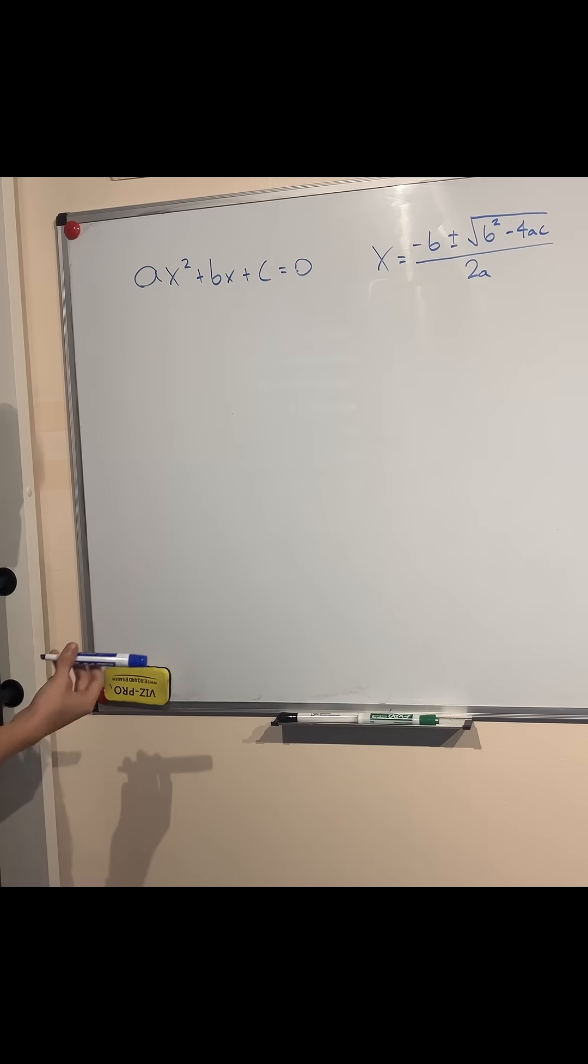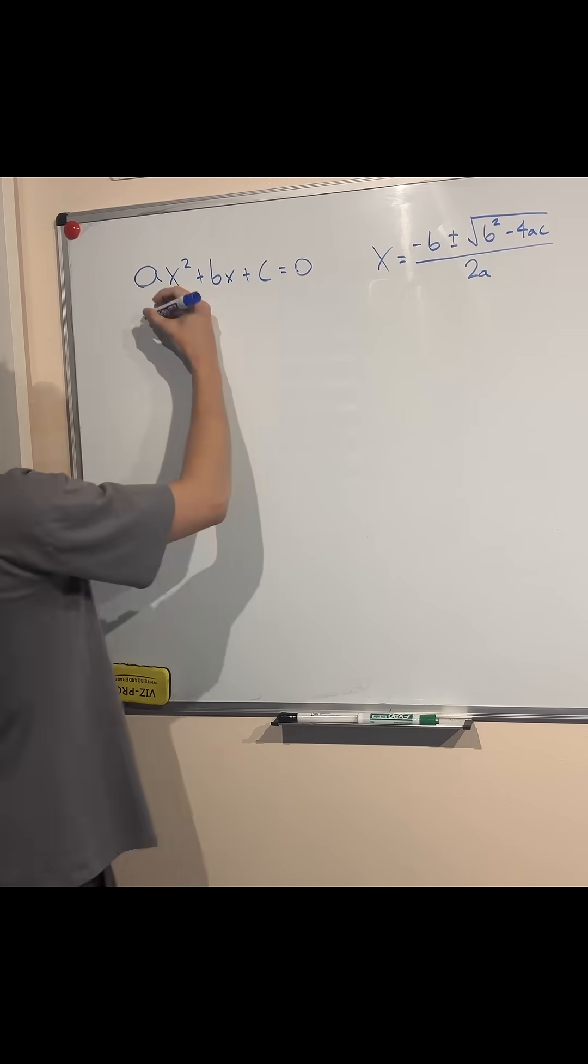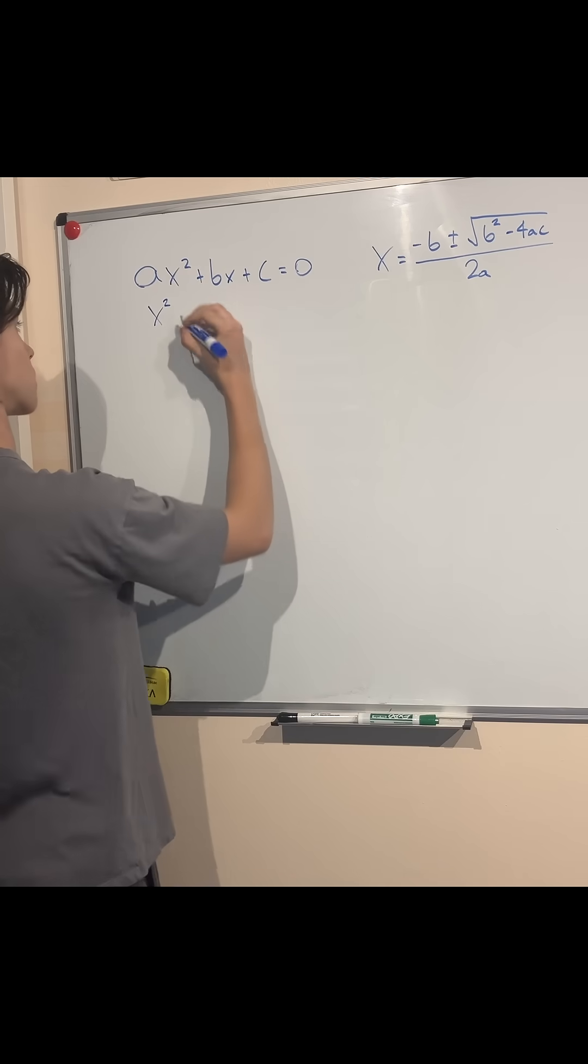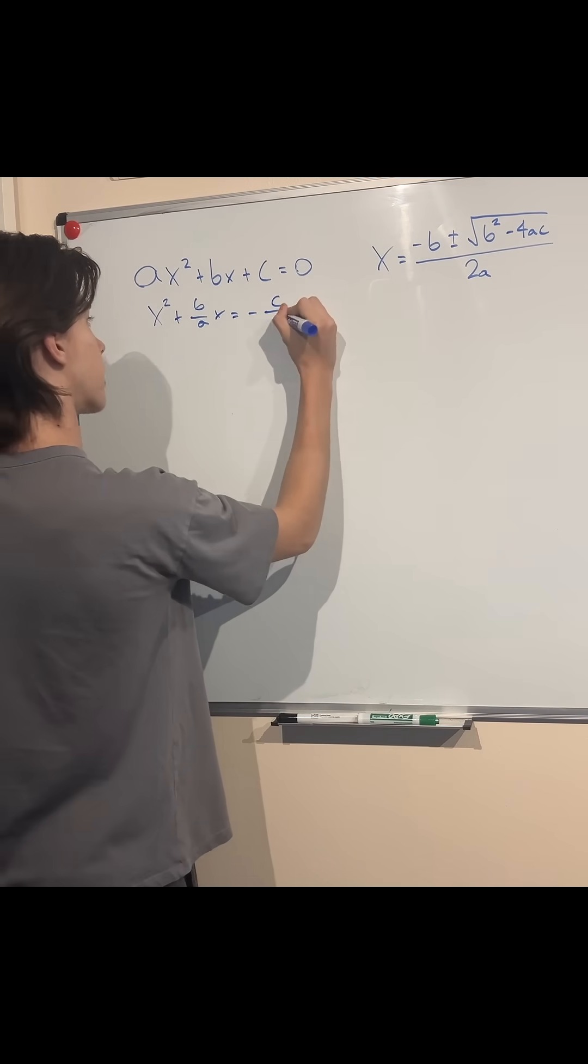And we can very easily try this ourselves. First, we move over the constant here and divide everything by the coefficient of the squared term in order to get a lonely squared term. x² + (b/a)x = -c/a.